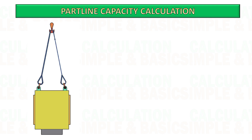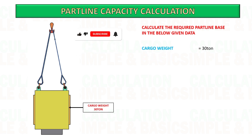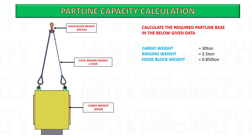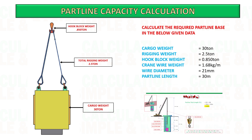For example, calculate the required part lines based on the below given data. You have a task to hoist a 30-ton cargo. The estimated weight of rigging is 2.5 ton, the hook block weight is 850 kilogram (0.850 ton), the estimated length of part line is 30 meters, and the weight of crane wire is 1.68 kilogram per meter. You can refer to my previous video for the calculation of part line weight.